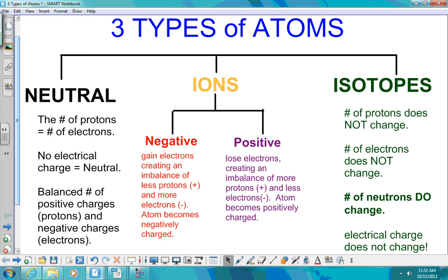So I want you across the top with the title three types of atoms, and then we'll have three bars coming down: neutral, ions, and isotopes.